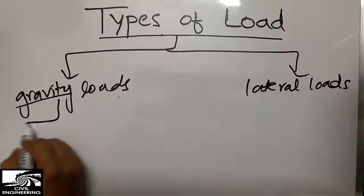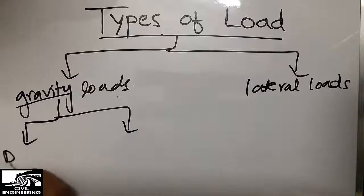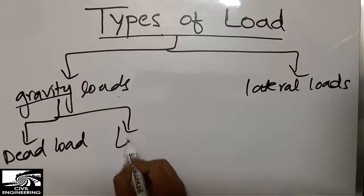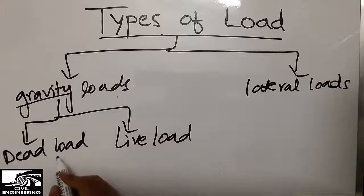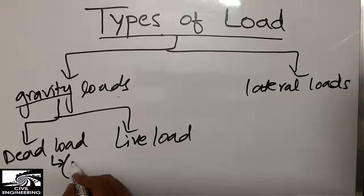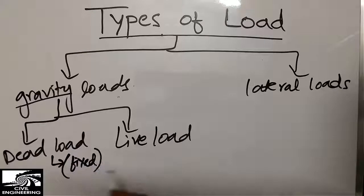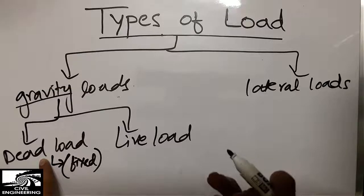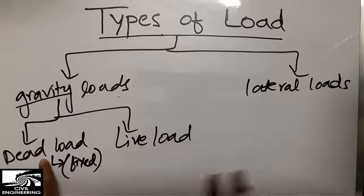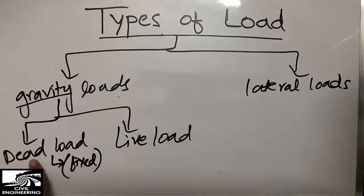Under gravity loads, we have two further classifications: dead load and live load. Dead load includes loads that do not change with time or position — they are fixed on a member. This may be the self-weight of the structure, and it may also include furniture load, because furniture is fixed on the structure throughout the year. So we call it dead load.